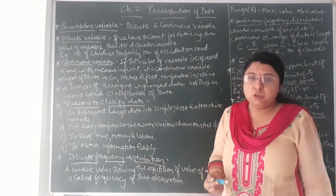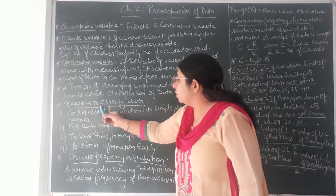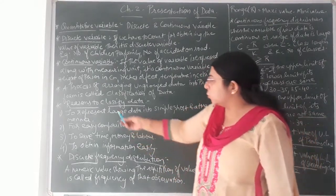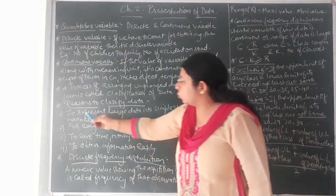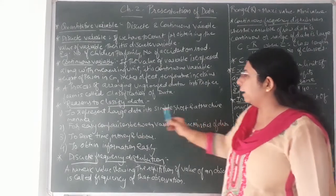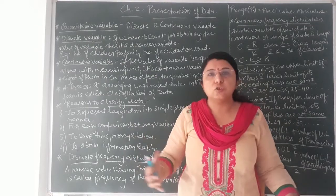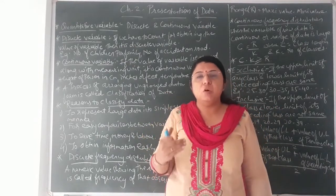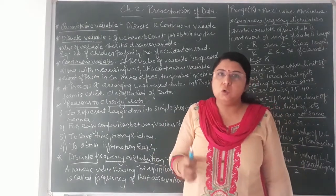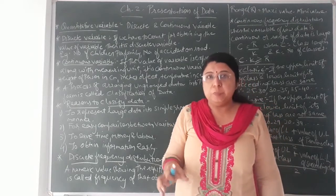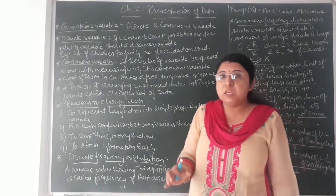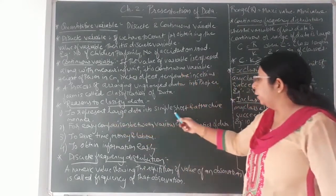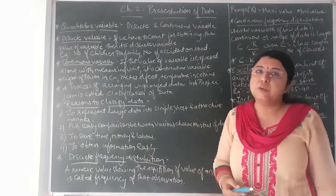Why is classification of data needed? First, to represent large data in a simple, short, and attractive manner — if data is properly framed in a tabular form, any person can interpret the results by looking at it. Second, for easy comparison between various characteristics of data. Third, to save time, money, and labour — analysing raw ungrouped data is time-consuming, whereas classified data allows analysis with less effort. Fourth, to obtain information easily — by tabular form or diagrammatical representation, even a layperson can understand the results.